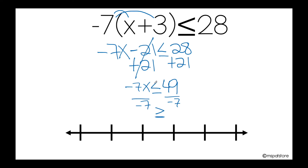Instead of pointing towards this direction, it's going to be pointing toward the other direction. So now I have x is greater than or equal to negative 7.